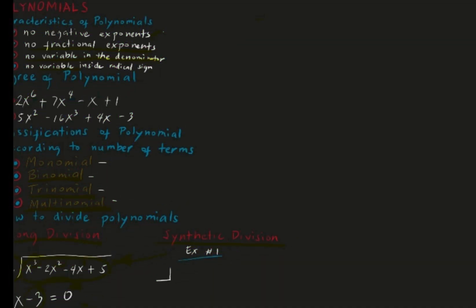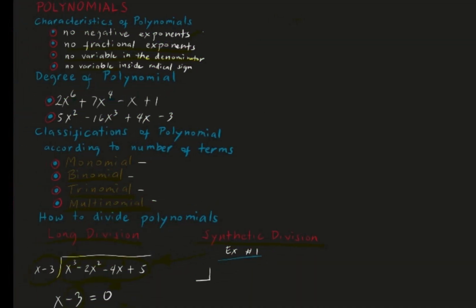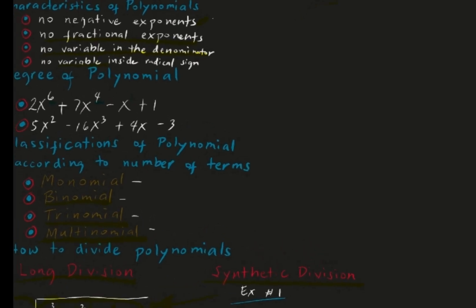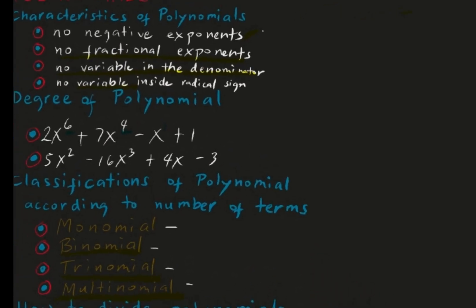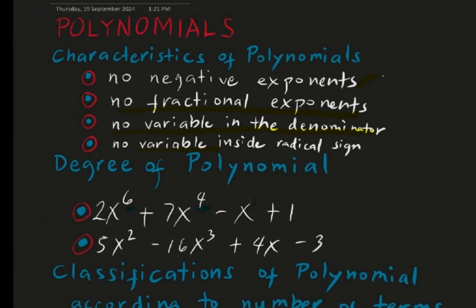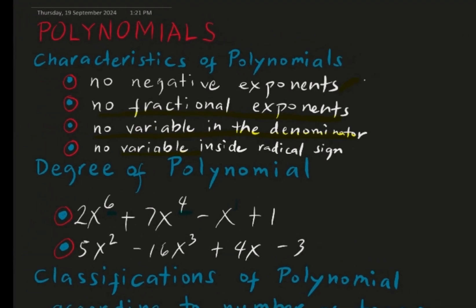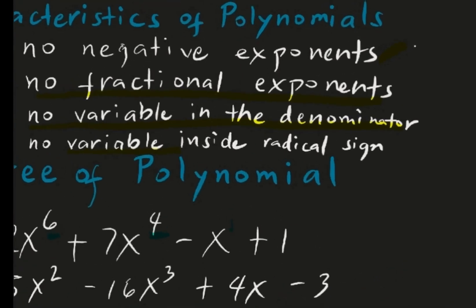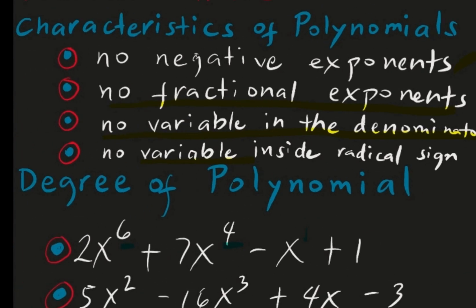This time, we are going to take up polynomials. First, let's identify or determine the different characteristics of polynomials. For us to say that an algebra expression is a polynomial, we have four characteristics. The first one: there must be no negative exponents.